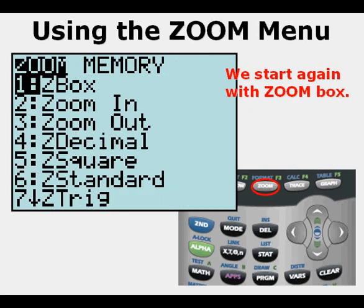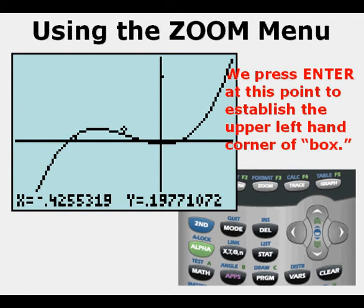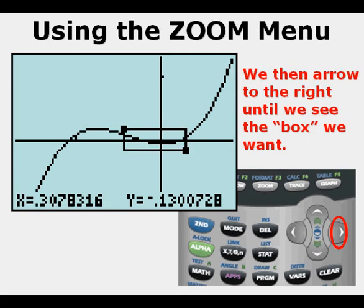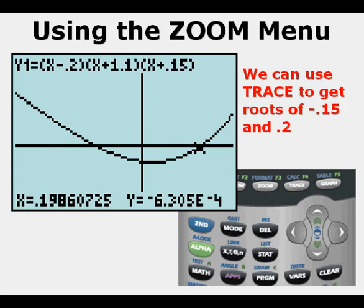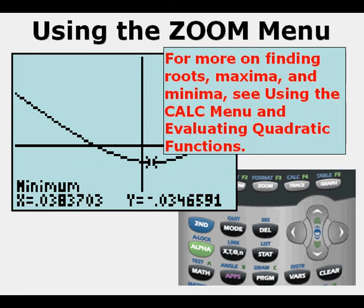We start Zoom Box again by pressing the Zoom button. After pressing Enter, we go to the upper left-hand corner of the box we want to evaluate and press Enter to establish it. We arrow downward setting the left edge of the box, then arrow to the right until we have the box we want, and press Enter. Now we have the new doubly zoomed-in window. We use Trace to find roots of about negative 0.15 and 0.2. We can also find a relative minimum of the graph near the y-axis using the Calc menu.